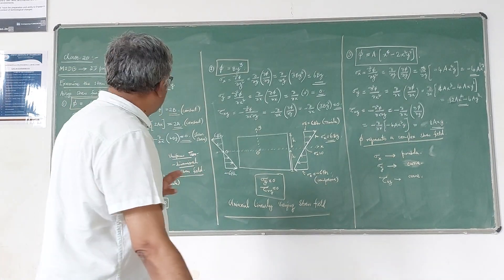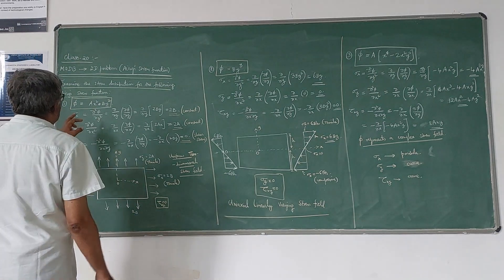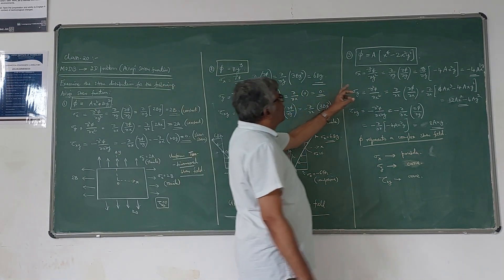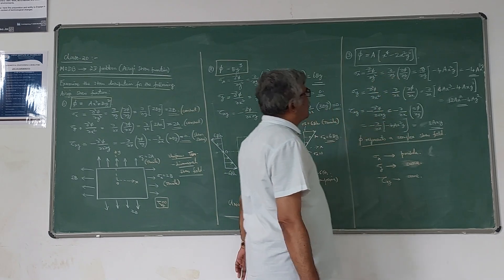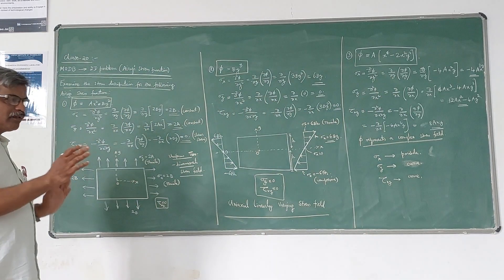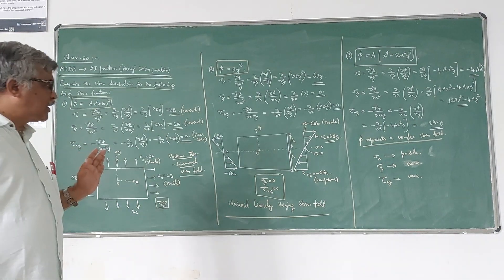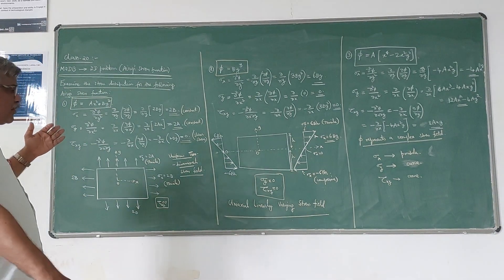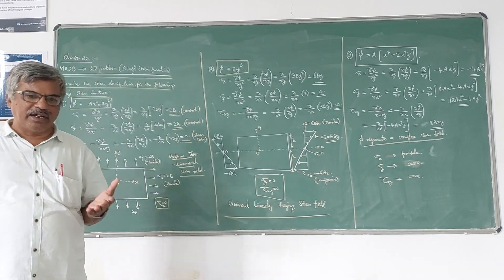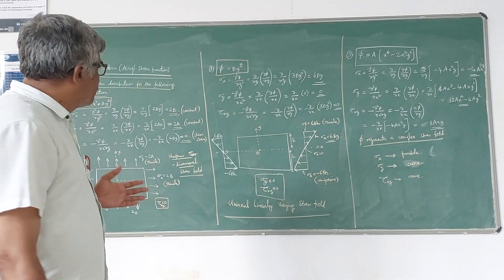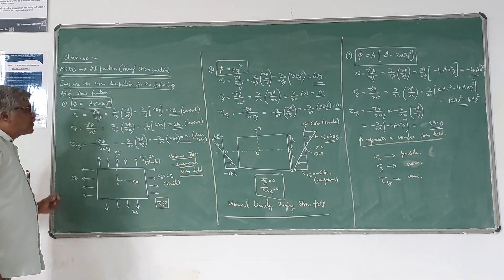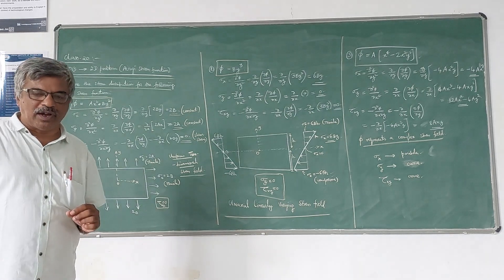Three Airy stress functions are given here: φ = ax² + by², φ = by³, and φ = a(x⁴ − 2x²y²). We will check one by one what type of stress distribution or stress field we can plot based on each Airy stress function. Let us take the first one: φ = ax² + by².